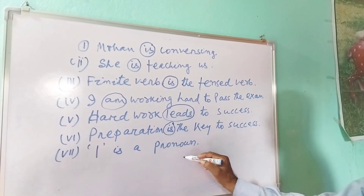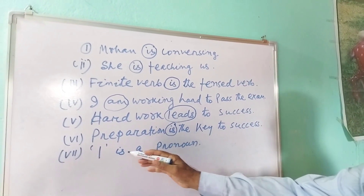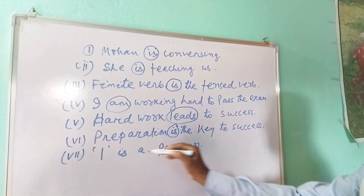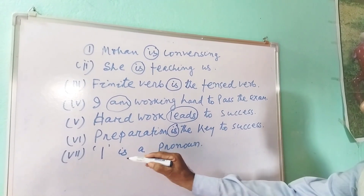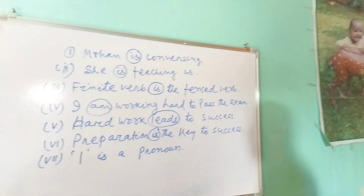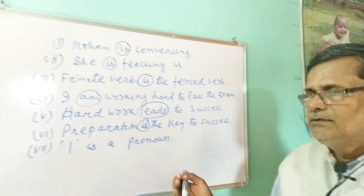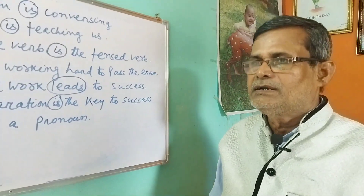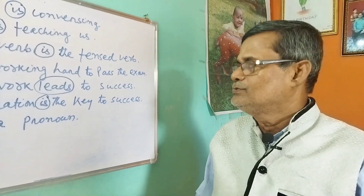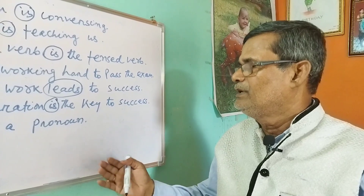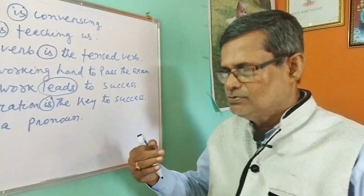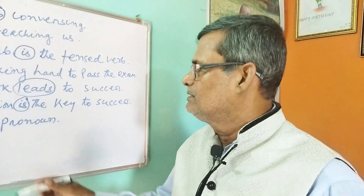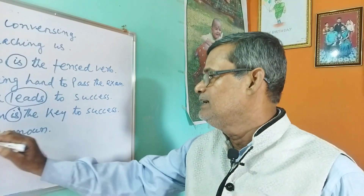Now, fill in the blanks with the correct finite verb. For example: 'I ___ a good boy' — you must identify the correct finite verb. Is it 'is,' 'are,' or 'am'? The answer is 'I am a good boy.' The word 'I' is a pronoun, so the correct finite verb to use with it is 'am.'